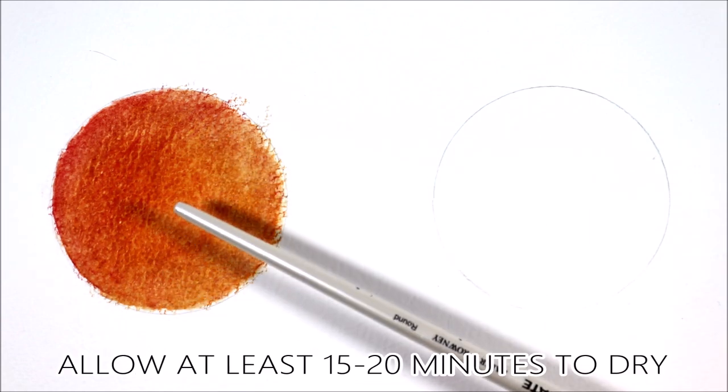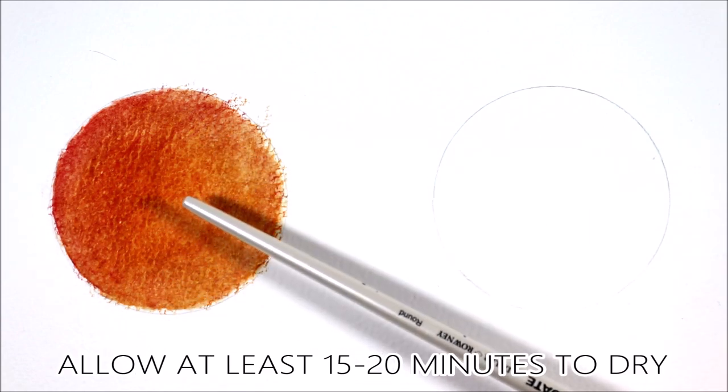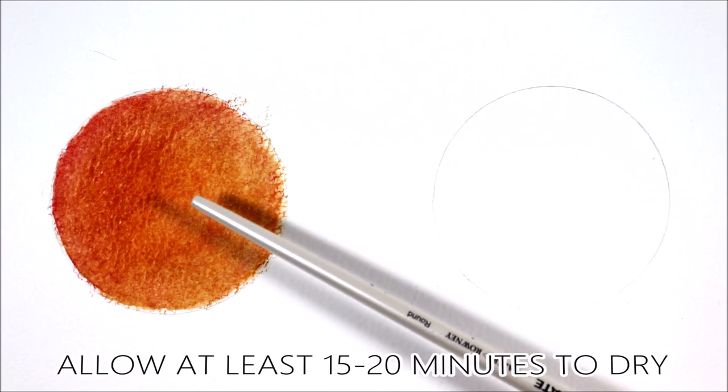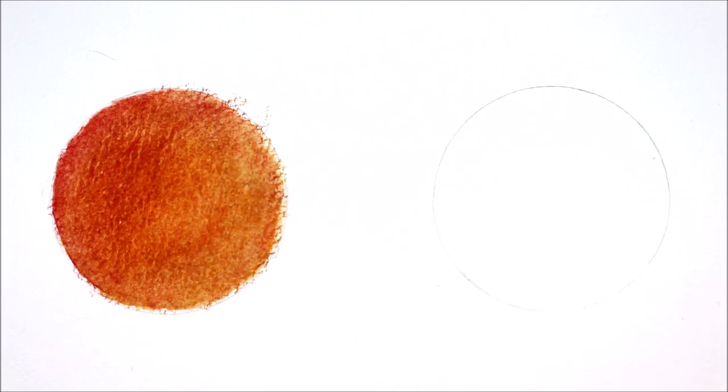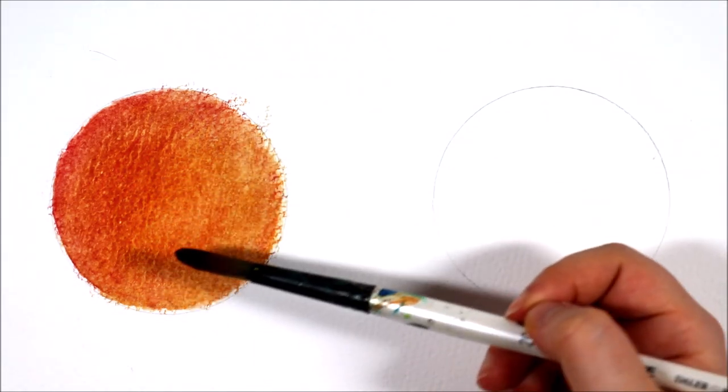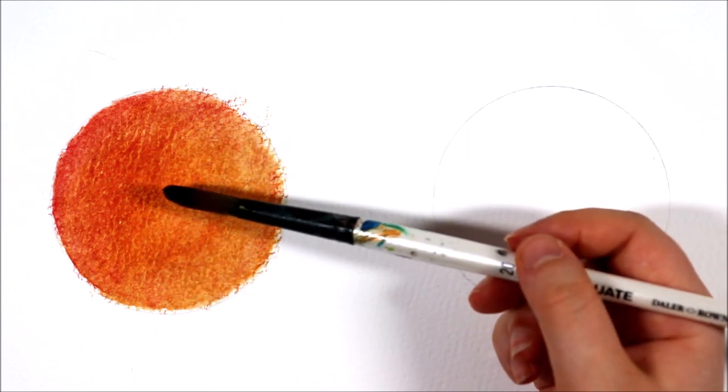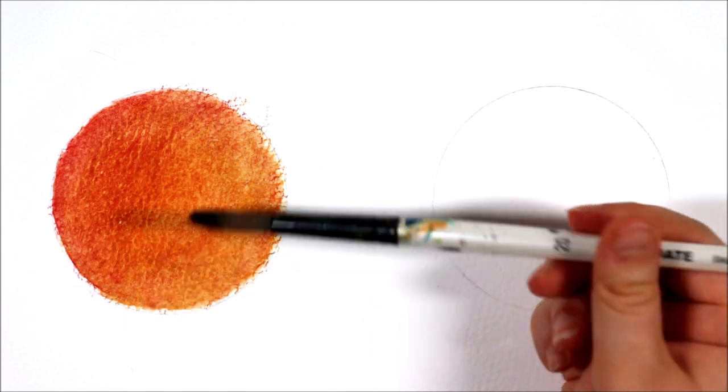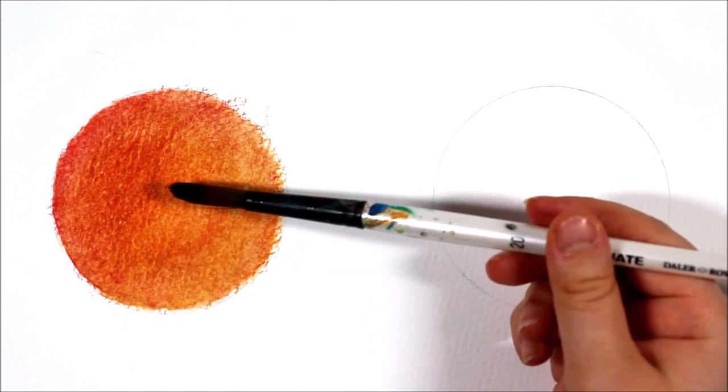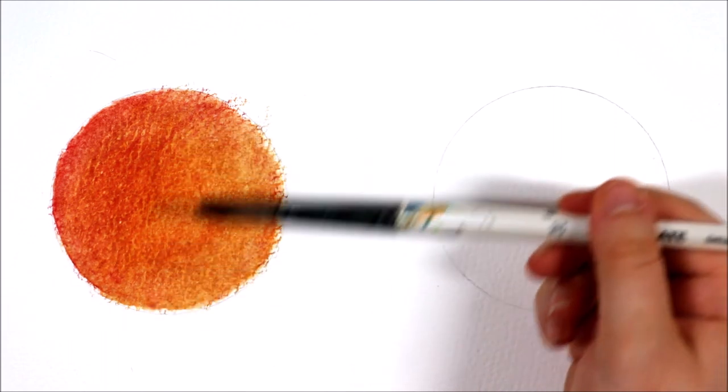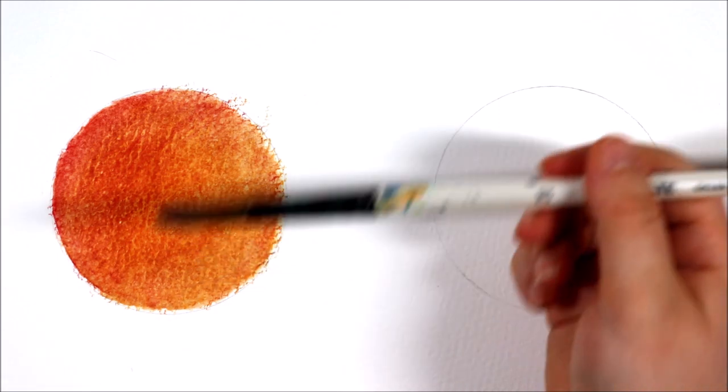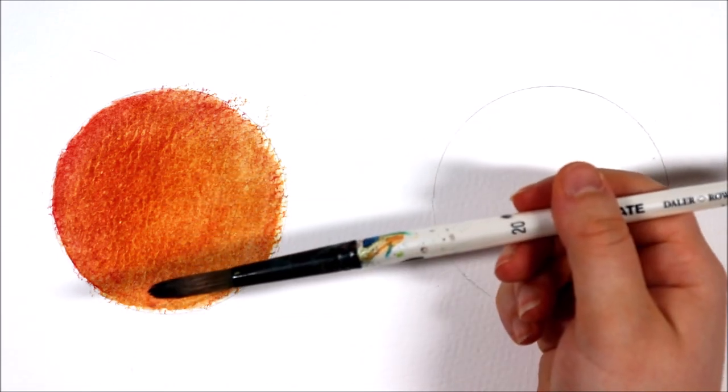You're going to want to leave this for about 15 to 20 minutes, sometimes half an hour to dry. You don't want to start going in with colored pencils while the solvent is still wet because that will cause problems. Make sure it's dry before going back in with colored pencils so you don't damage the tooth of the paper by applying hard pressure.